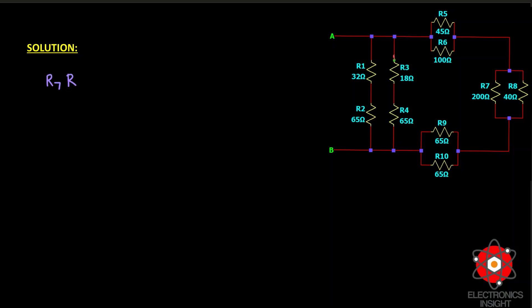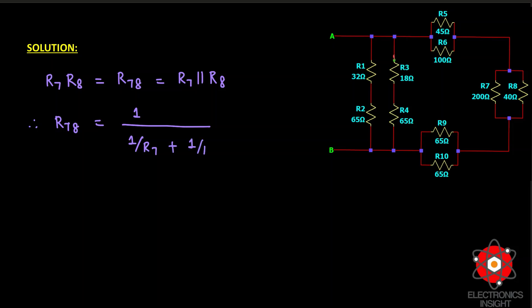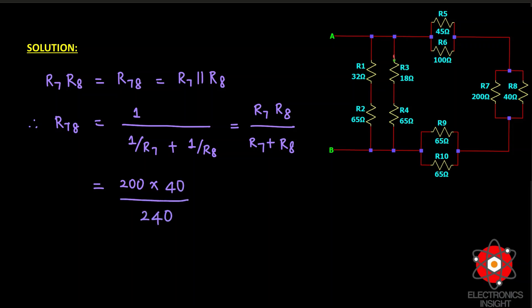Starting with R7 and R8 in parallel, denoted R78, the equivalent resistance formula is 1 over (1/R7 + 1/R8), simplified to R7×R8 divided by R7+R8. Substituting values: 200 ohms × 40 ohms divided by (200 + 40) = 8000/240, giving us 33.33 ohms.